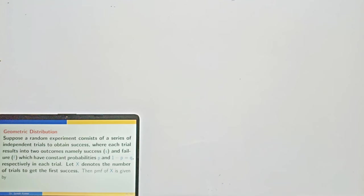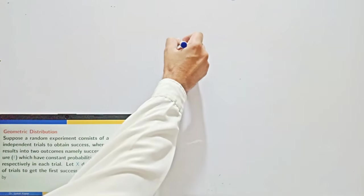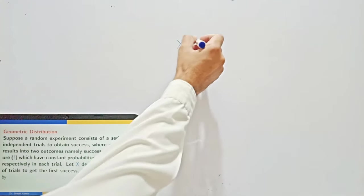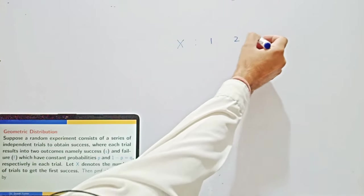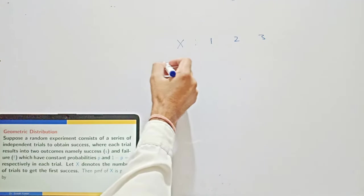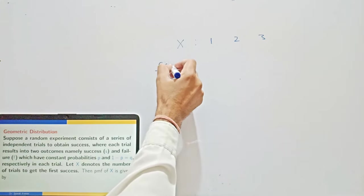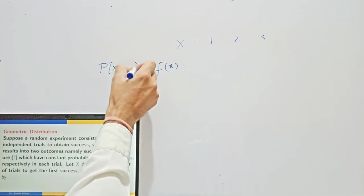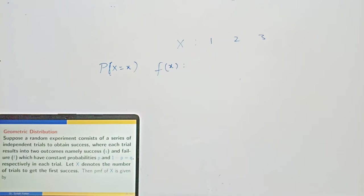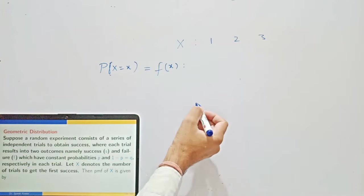So how do we get the PMF of this random variable X? What are the possible values of X? It is possible that you get success in the first attempt itself, the second attempt, third attempt, and so on. The probability of getting success in the first attempt itself is P.